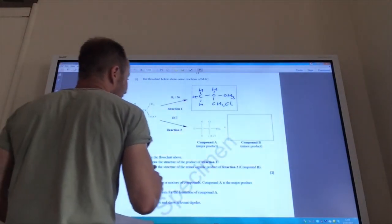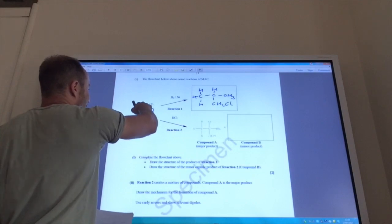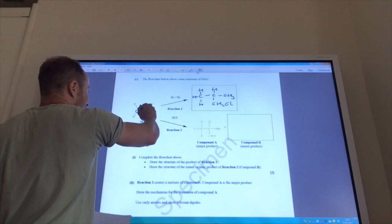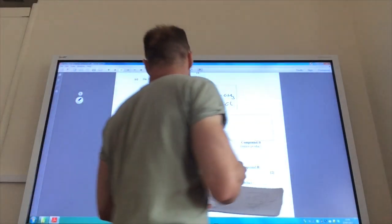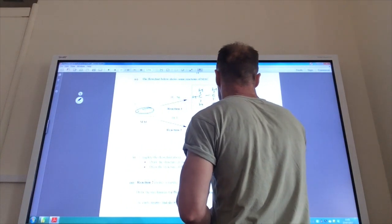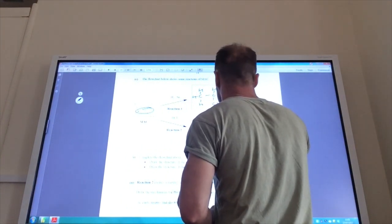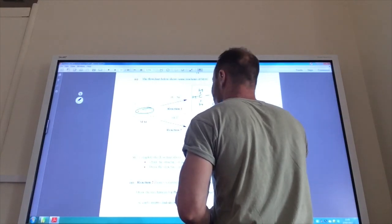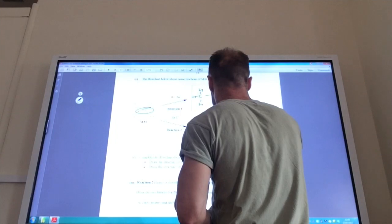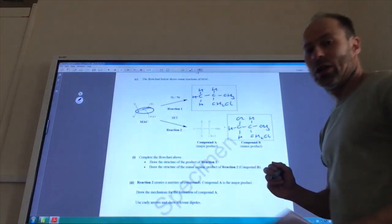This is the major product, because I'm adding HCl across there. As you know, H, the major one will be H goes there, the Cl goes there, because the H goes to the carbon with most hydrogen. So, the minor product will just be where I swap those over, so we do this one, CH2Cl, and that's going to be H, that will be H there, but now this will be Cl there, and then my other H will go there.